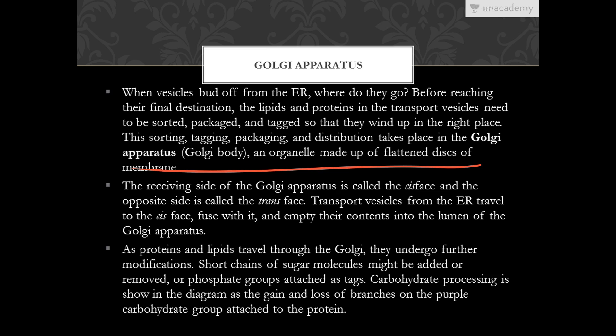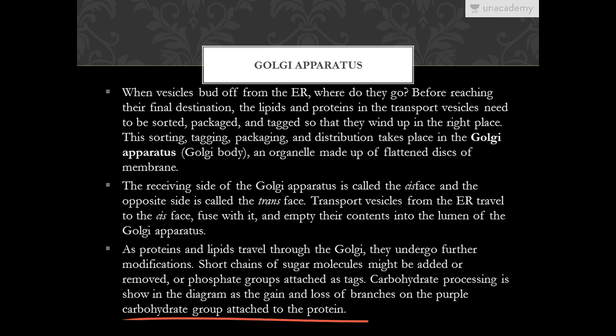The receiving site of the Golgi apparatus is called the cis face and the opposite side is the trans face. Transport vesicles from the ER travel to the cis face, fuse with it and empty their contents into the lumen of the Golgi membrane. As proteins and lipids travel through the Golgi, they undergo further modifications — short chains of sugar molecules might be added or removed, or phosphate groups attached as tags.